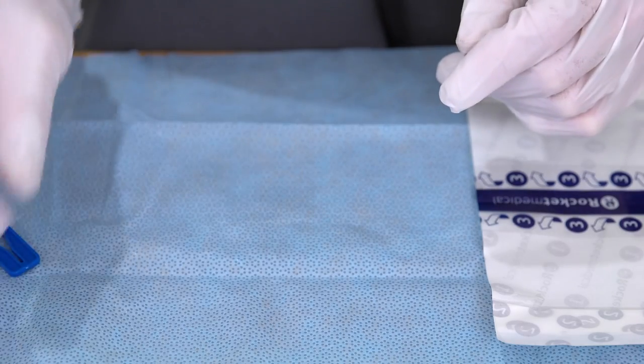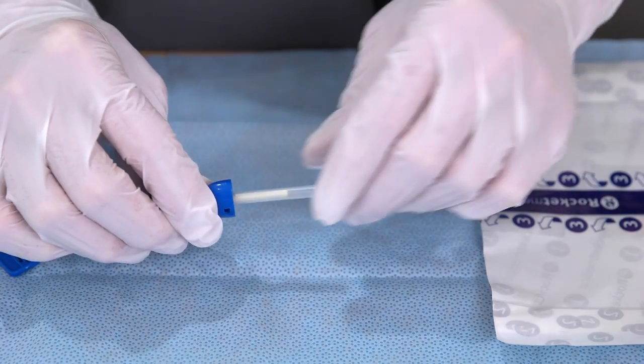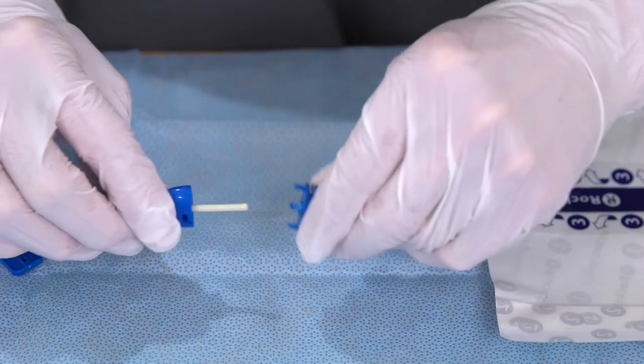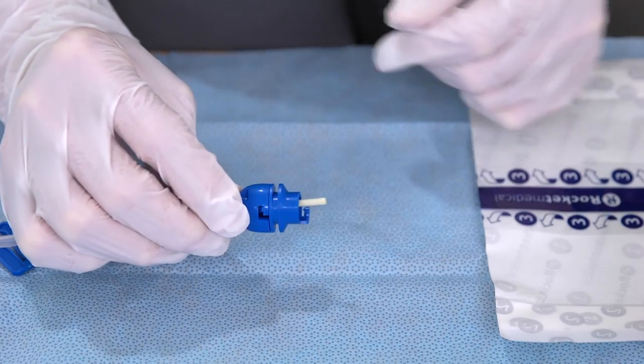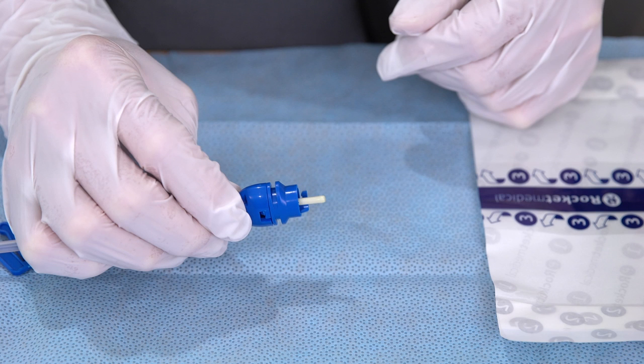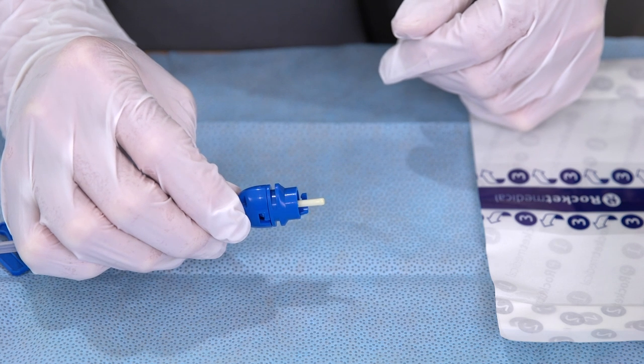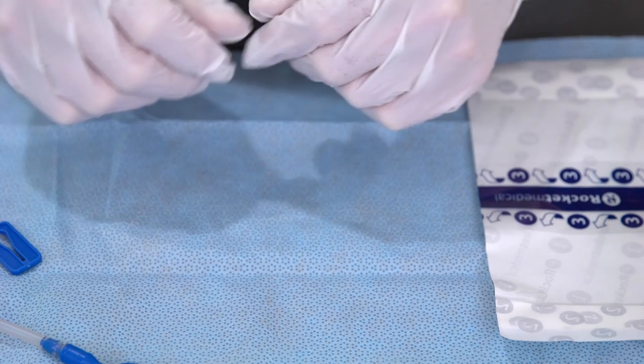Remove the access tip cover. Take the adapter and slide it over the access tip with the four prongs facing inward. Push the adapter and the drainage line together, so the four prongs click into the drainage line and become secure. Then set the drainage line down in the sterile field.